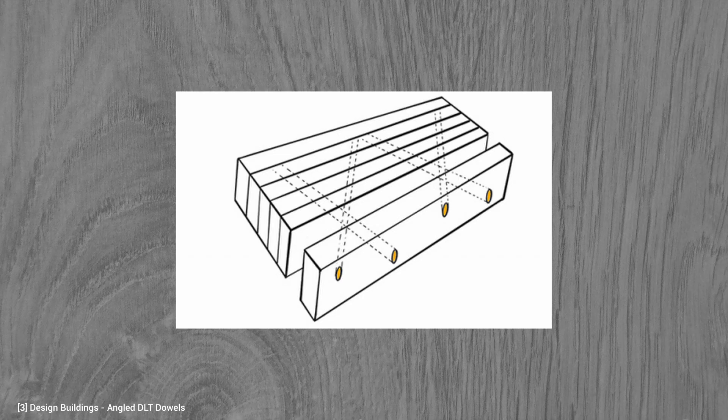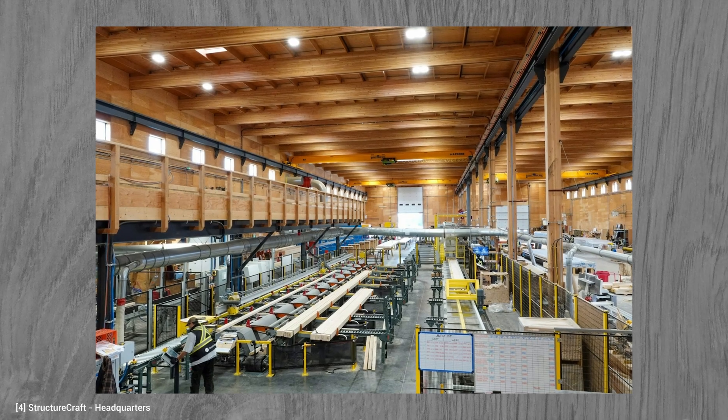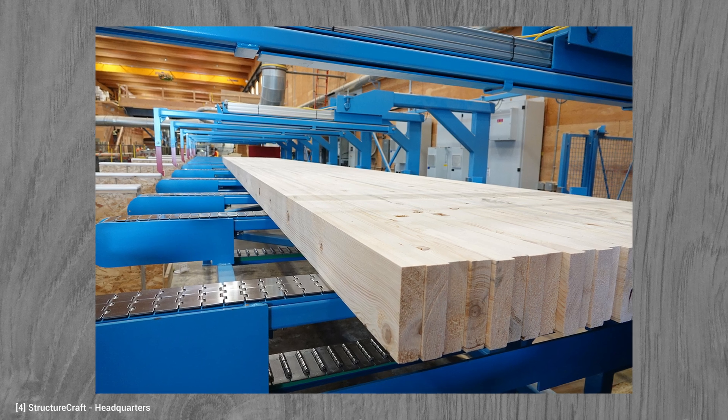Dimensional changes in dowel laminated panels, caused by moisture and temperature fluctuations, can cause separation around the dowels. In 2001, an Austrian company developed a way of inserting the dowels at angles, making it possible to create V and W configurations, which solved this issue. In 2017, StructureCraft installed the first DLT manufacturing facility in North America, which is also the biggest manufacturing facility for DLT in the whole world.